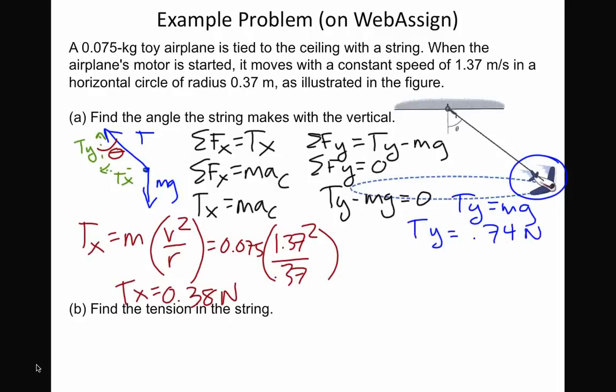So the angle theta is the inverse tangent of what? Let's see, the opposite is Tx, right? And then the adjacent is Ty. So it's Tx over Ty. And when you plug that in, you get 27 degrees.